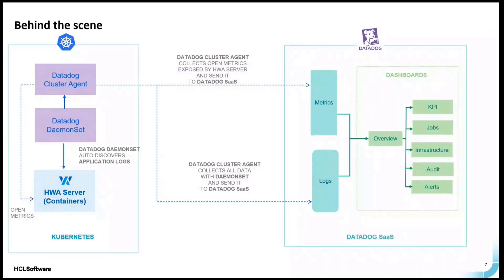Now I'll explain the architecture of this DataDog solution. This is the workflow automation. It exposes two things: one is OpenMetrics, and the other is application logs. The automation is installed on a Kubernetes flavor. In the infrastructure, we install a DaemonSet and a DataDog Cluster Agent. The DaemonSet automatically discovers and collects logs from the workflow automation and sends them to the DataDog Cluster Agent, which acts as a proxy and sends data to our DataDog SaaS.